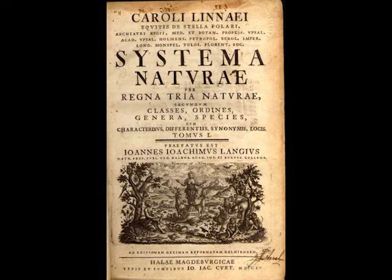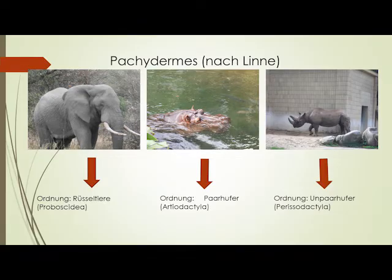Dass Evolutionsverlauf und Verwandtschaftsbeziehungen früher keine große Rolle spielten, zeigt sich zum Beispiel darin, dass Elefanten, Flusspferde und Nashörner als Dickhäuter — Pachydermis — zusammengefasst wurden, obwohl wir heute wissen, dass alle drei Gruppen unterschiedlichen evolutionären Linien entsprangen.